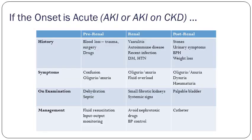Classification of acute renal failure: the main thing to establish is whether it's pre-renal, renal, or post-renal. If it's pre-renal: ask about acute blood loss, recent surgery or traumatic events, drug history — are they on anything that causes reduced blood flow to the kidneys such as an ACE inhibitor? Look for symptoms of confusion or sepsis, check if they're oliguric or anuric. On examination: signs of dehydration, blood loss, or sepsis. Management: active fluid resuscitation and strict fluid input and output monitoring.